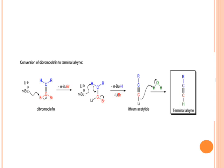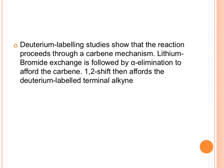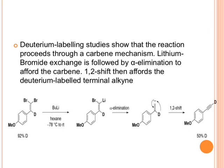During this whole mechanism, there is generation of carbene as an intermediate, but that is generated at C2. This can be proven by deuterium labeling, which shows that the reaction proceeds through a carbene mechanism. Lithium-bromine exchange is generally followed by alpha elimination to generate the carbene, and then there is a 1,2-shift which generates a deuterium-labeled terminal alkyne, as shown in the example where dibromo olefin is treated with butyl lithium. First, lithium-halogen exchange occurs, then alpha elimination by elimination of lithium bromide generates a carbene, and then deuterium shifts from position one to two (a 1,2-shift), generating a terminal alkyne. This proves that during the reaction there is generation of carbene as an intermediate at C2.